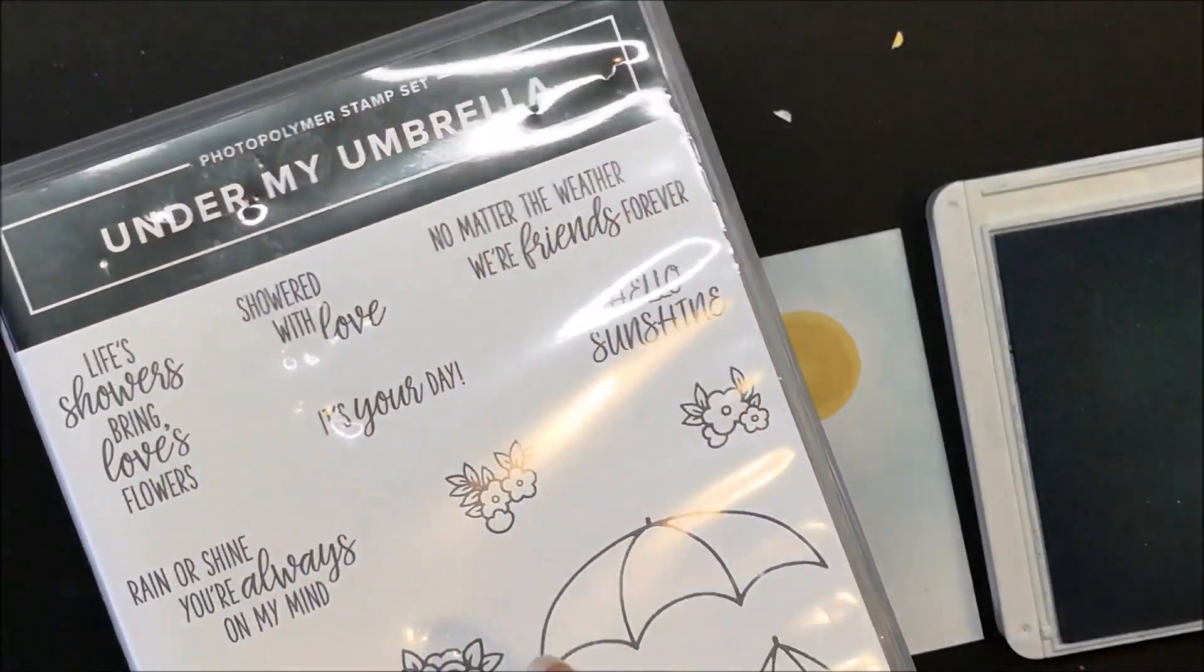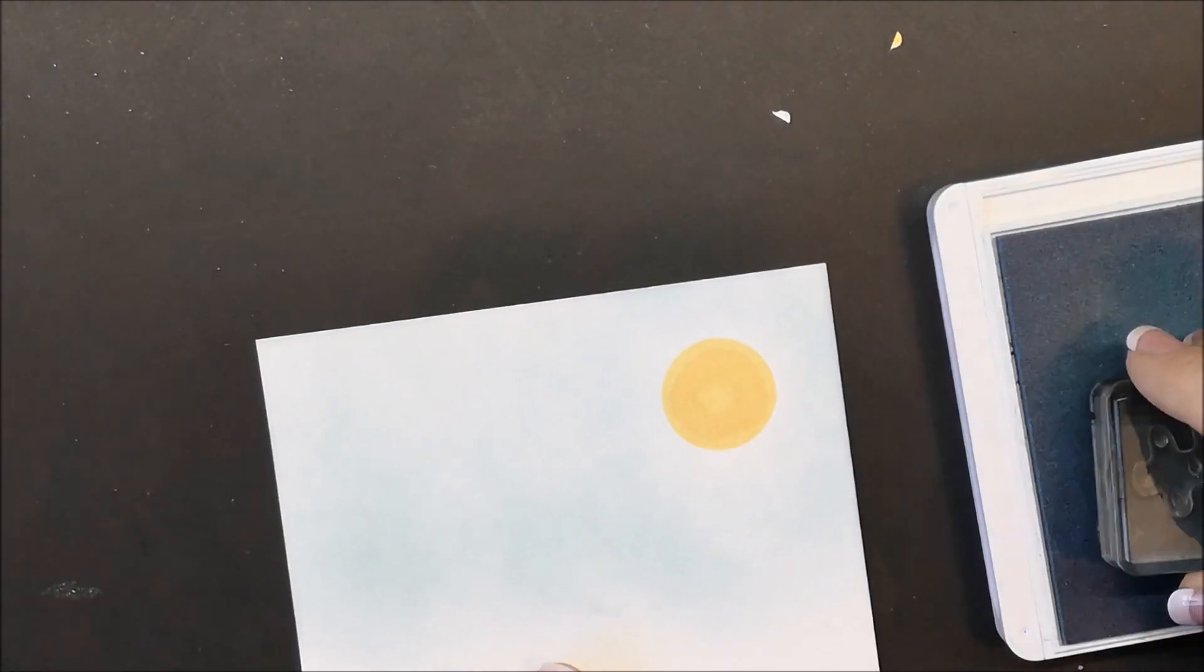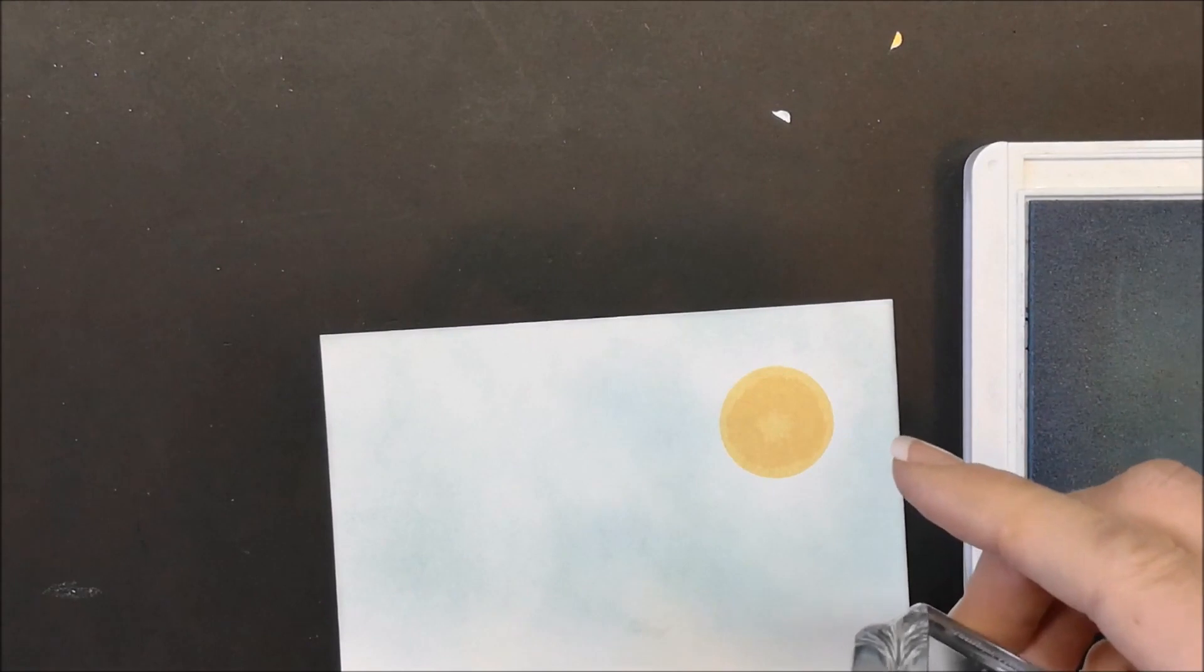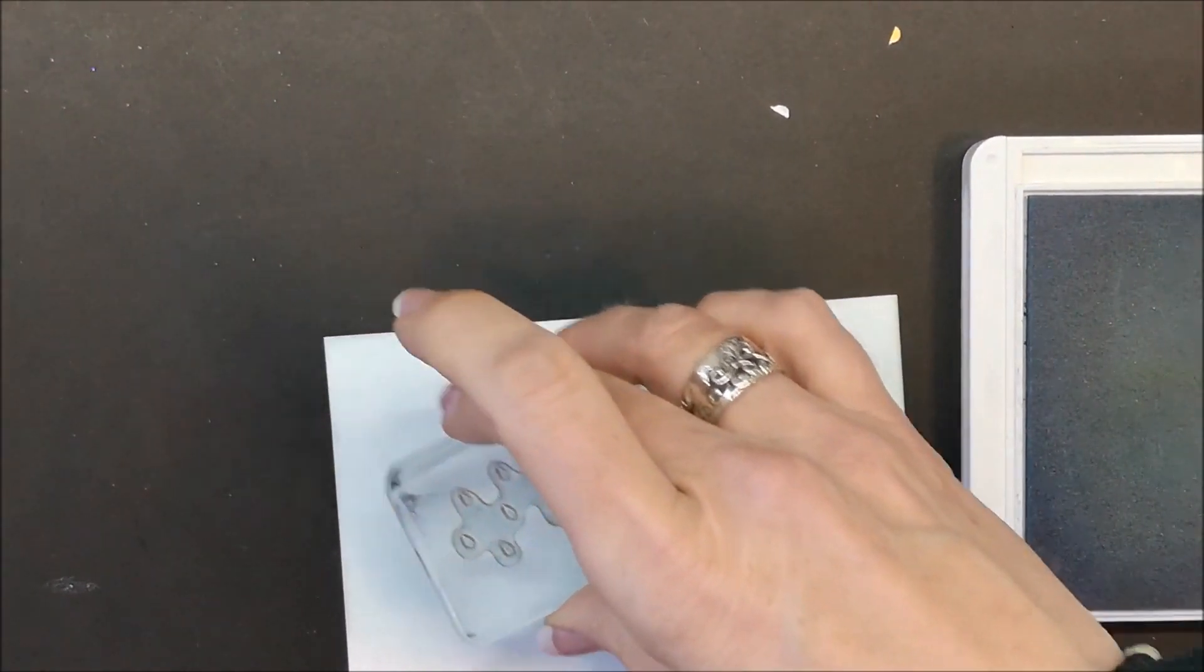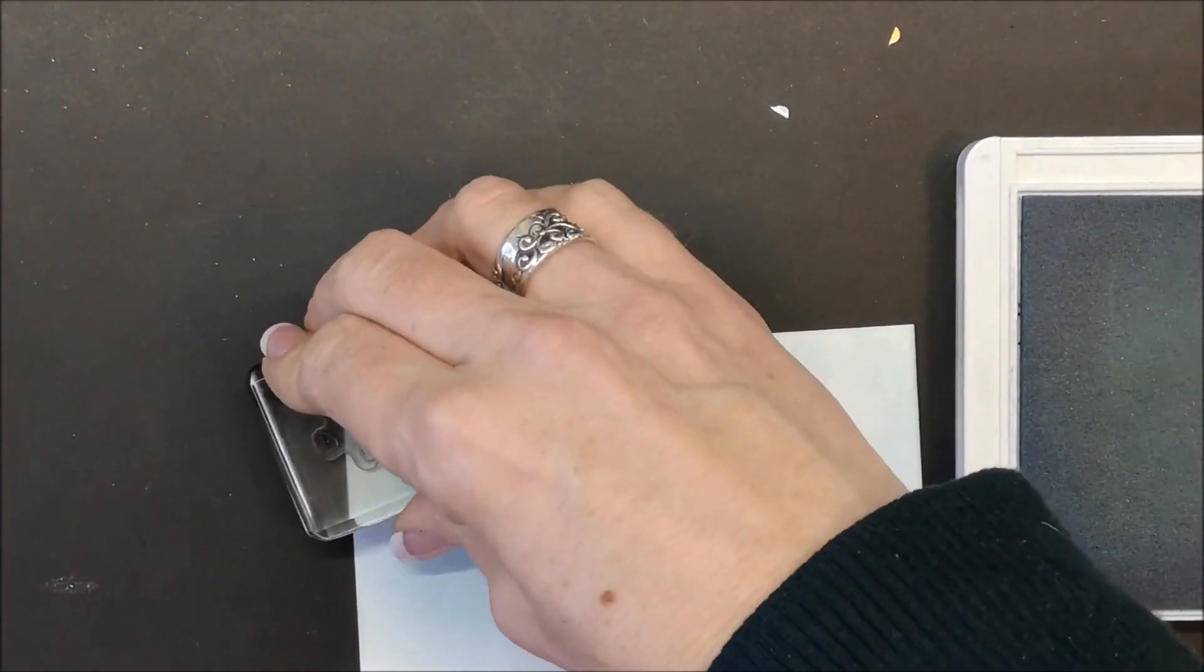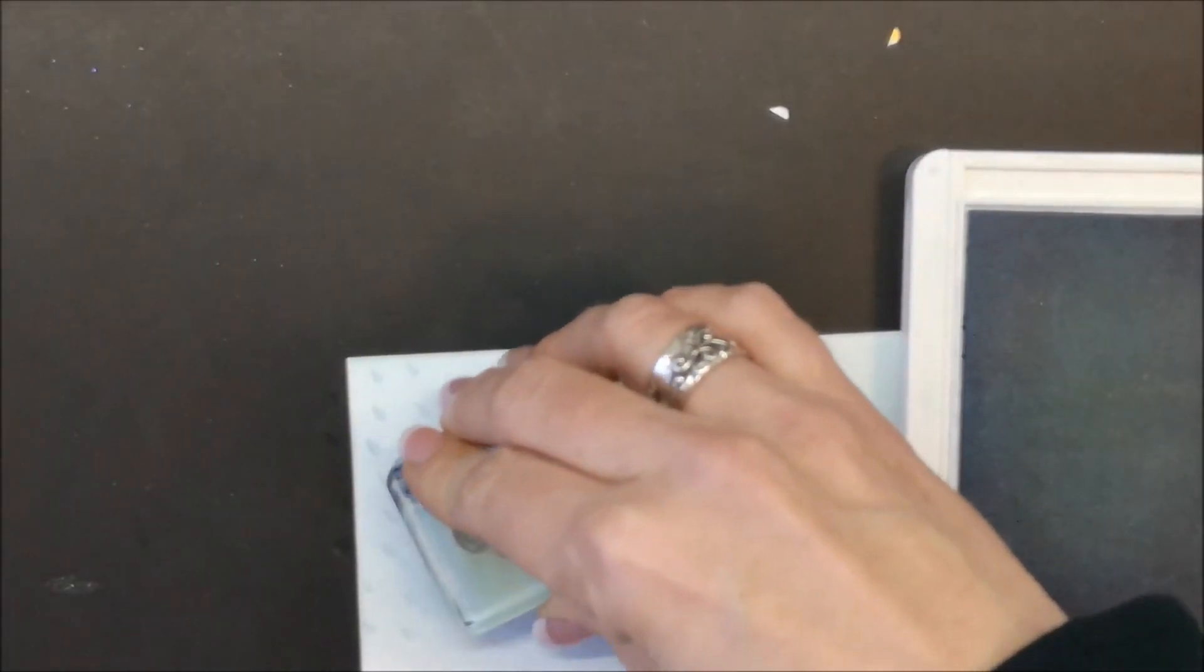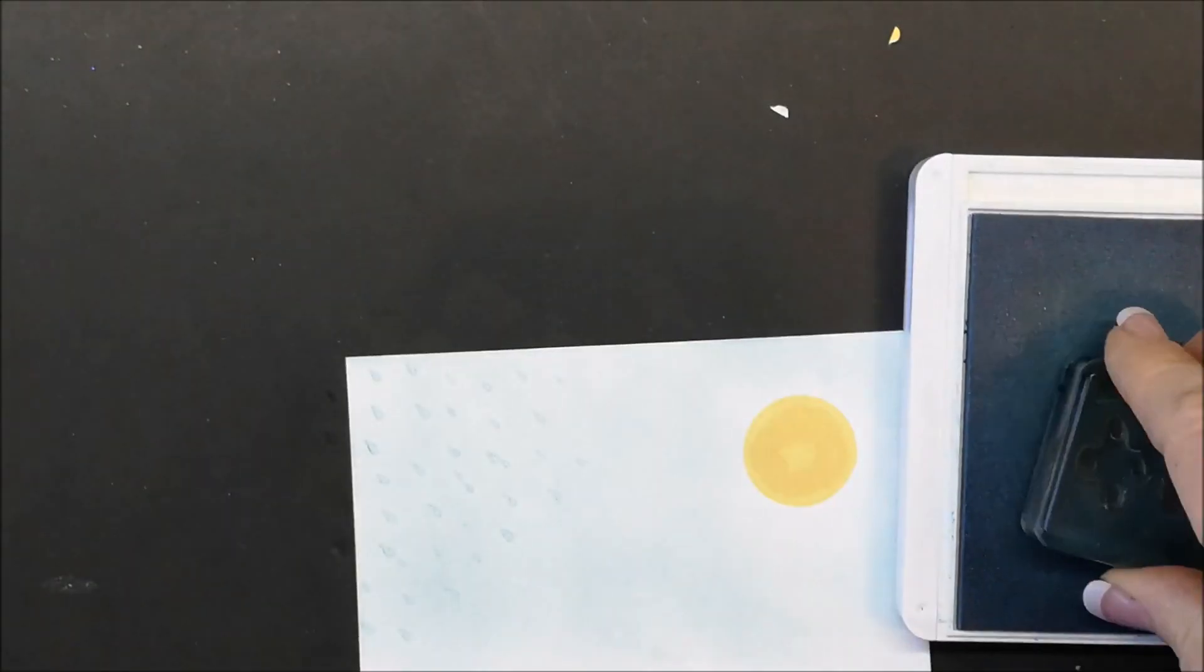I'm pulling in the stamp set from Under My Umbrella and I'm going to stamp the raindrops in the Seaside Spray. Just like in my first card, I'm going to stamp on a diagonal rather than straight down. That's why I have the Sun on one side and the raindrops on the opposite side because I'm going to use the stamp set Rain or Shine You're Always on My Mind.